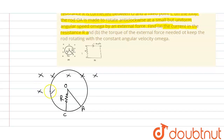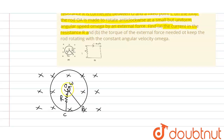There is an external magnetic field going inside the plane. We are rotating this rod anticlockwise with an external force at angular velocity omega. As a result, the flux through the OAC area will change, and an EMF will be generated across the rod OA. We need to calculate that EMF.